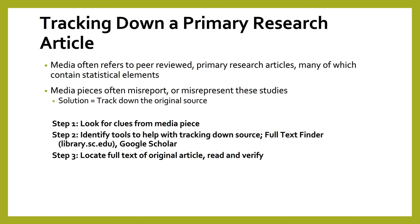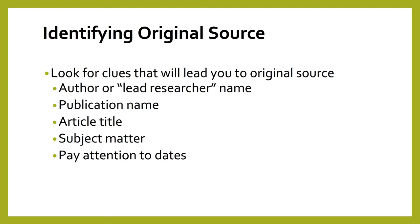The overall steps for tracking down a primary research article are: one, look for clues from the media piece; two, identify tools to help with tracking down the source — Full Text Finder and Google Scholar in this case; and step three, locate the full text of the original article, read, and verify how well the media piece reported on the research. You can find clues such as an author or lead researcher name, a publication name, or an article title — grab it immediately if you see one, as it's the main piece of the puzzle but is often left out of media reports. Also note the specific subject matter being addressed, any dates mentioned in the media piece, and when the media piece itself was published.